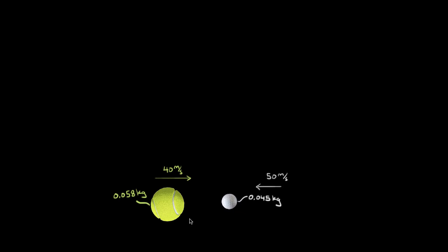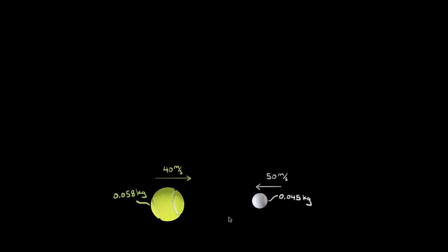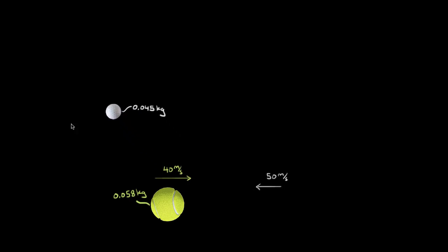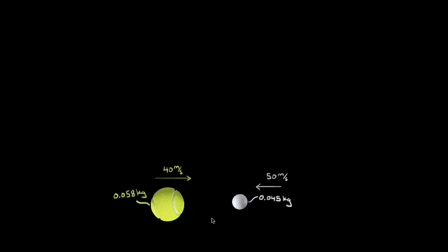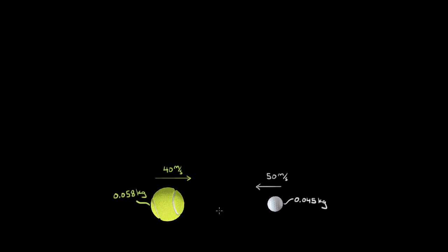I want them to collide and stay in a single direction — not a glancing collision where the golf ball goes flying up. It's all going to happen in one dimension. The question is: just given the initial velocities and the masses, can we figure out the final velocities of the golf ball and the tennis ball?